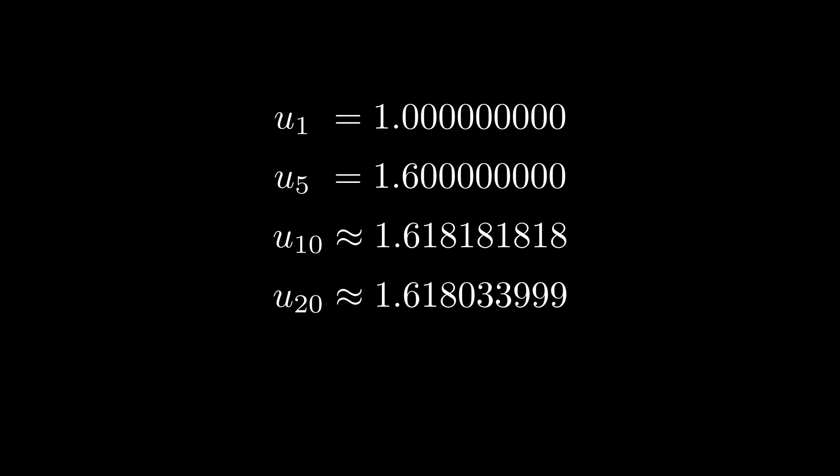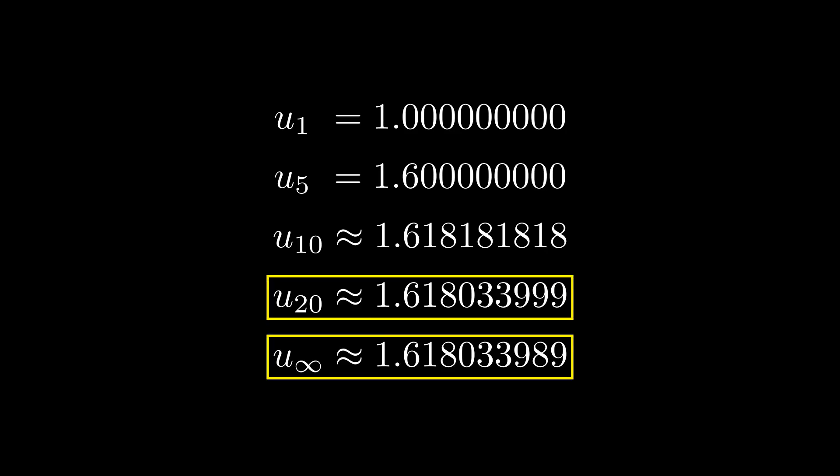We can actually substitute the solution that we generated earlier, and we can see that the theoretical last term of this sequence is the same as u(20) to 8 significant figures, which is unbelievably close, and this is really strong evidence supporting that the answer that we have is correct.